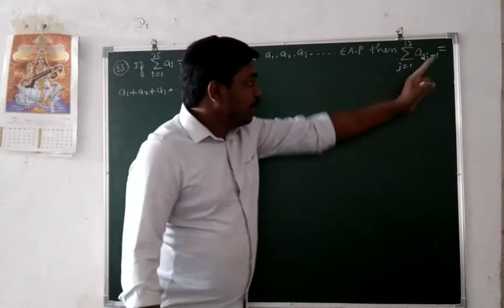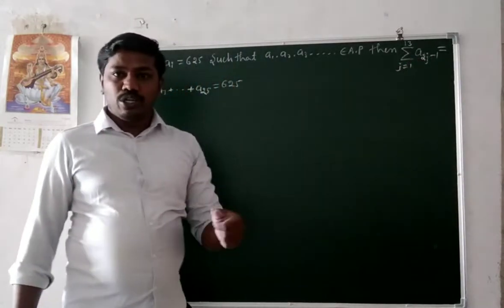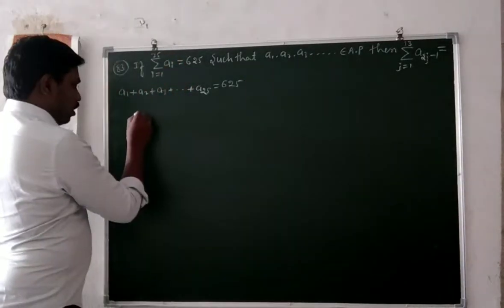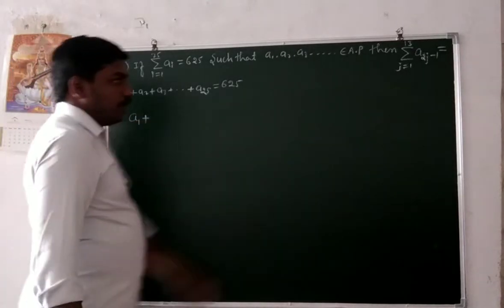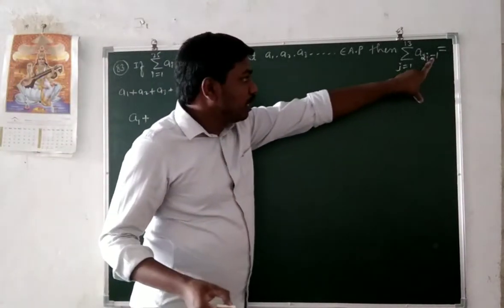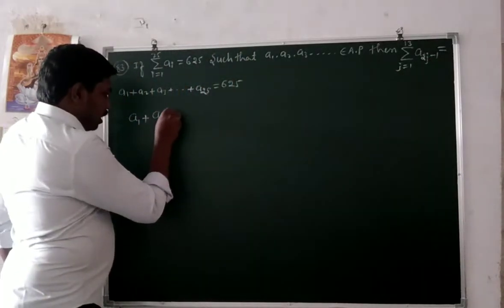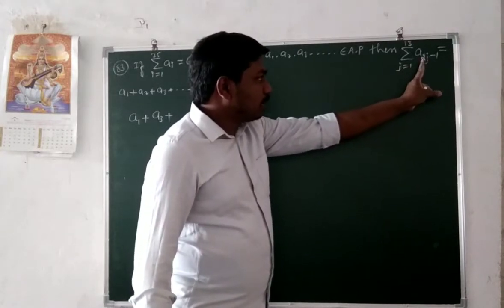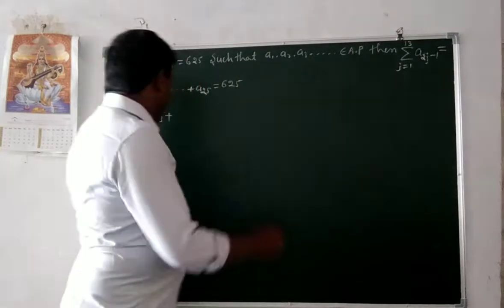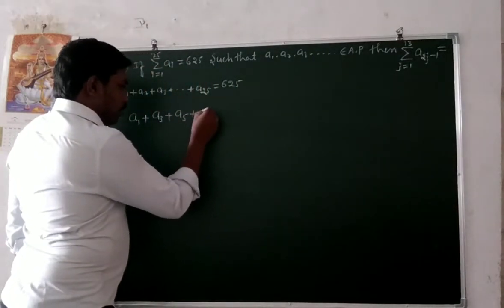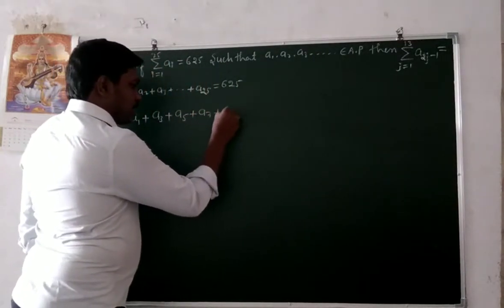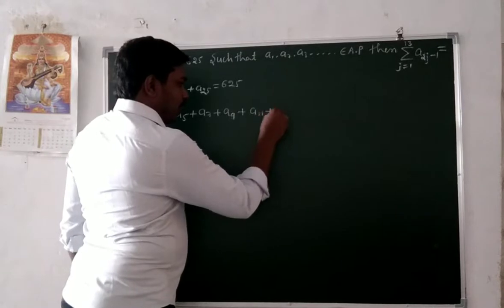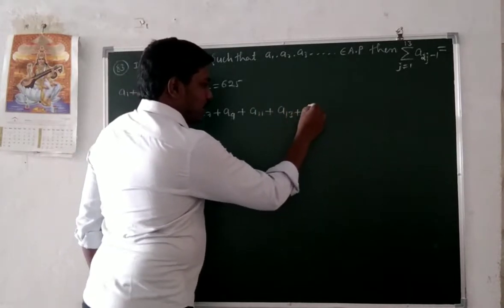For a(2j-1): suppose j=1, then 2×1-1=1, giving a1. Substitute j=2: 2×2-1=3, giving a3. Substitute j=3: 2×3-1=5, giving a5. Continuing: a7, a9, a11, a13 and so on up through the odd-indexed terms.